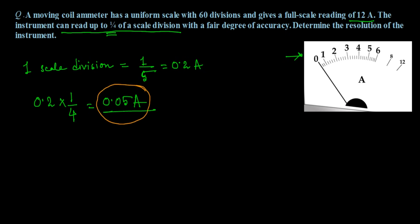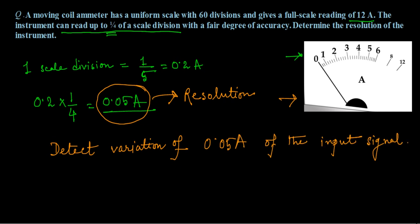This particular ammeter can detect the variation of 0.05 ampere of the input signal. So there is a difference between 0.2 ampere and 0.05 ampere.